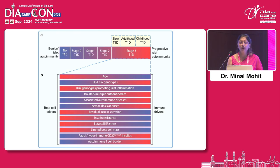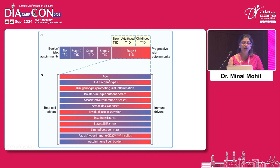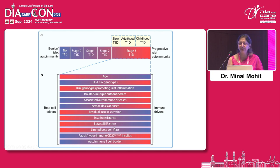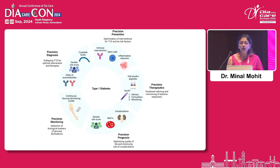To conclude — heterogeneity begins right from in utero. In utero there is genetic formatting, the child develops autoimmunity, and depending upon the environmental insult there is progression. This gives us a variability of age, HLA types, risk genotype promoting inflammation, multiple autoantibodies, associated comorbid autoimmune conditions, ketoacidosis as a presentation, residual insulin, insulin resistance, beta cell endoplasmic reticulum stress, beta cell mass loss, hyperimmune CD20 insulinitis, and autoimmune T cell burden. With this variability, we need precision in prevention, precision in therapeutics, precision in diagnosis, and precision in monitoring.